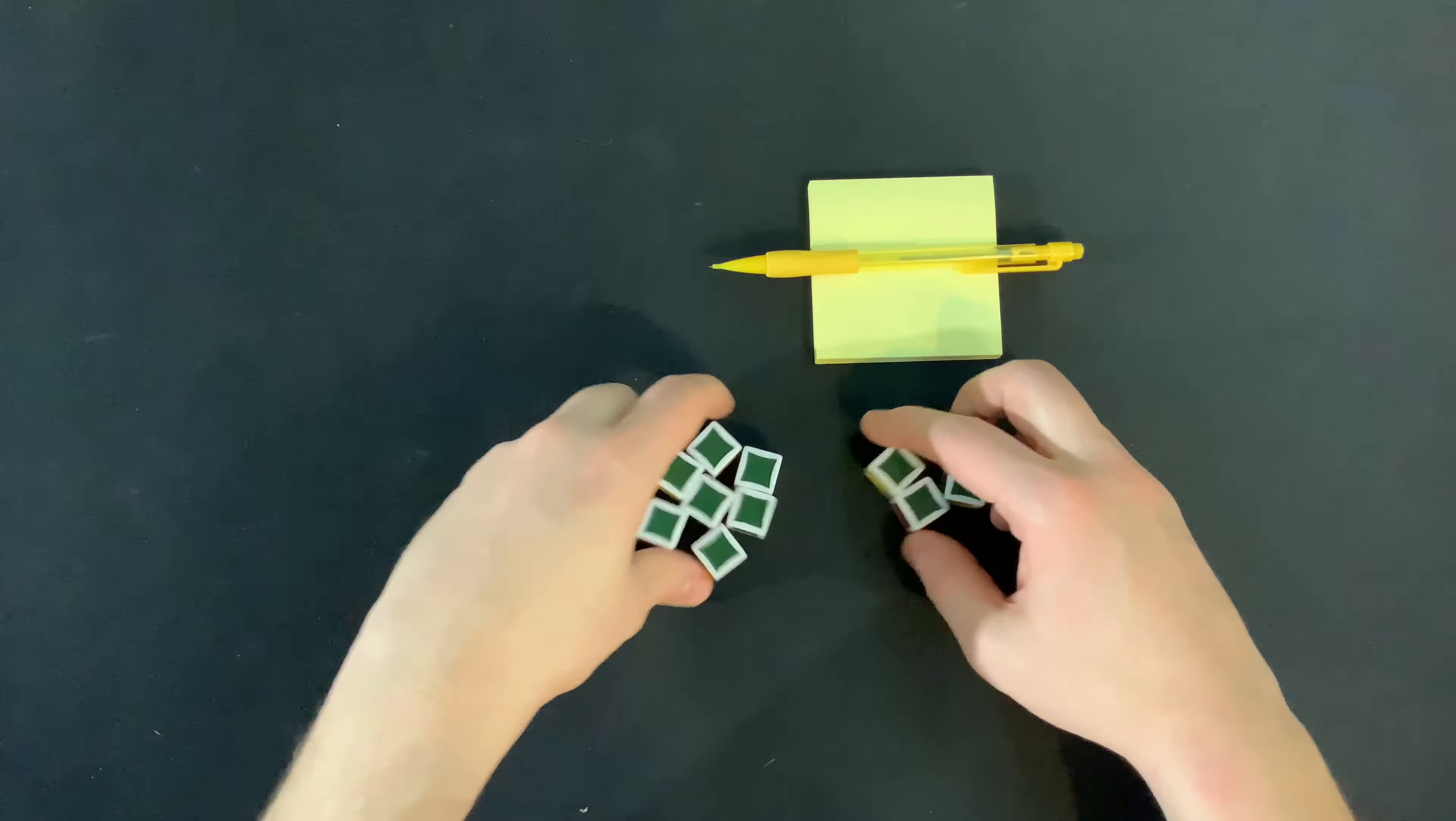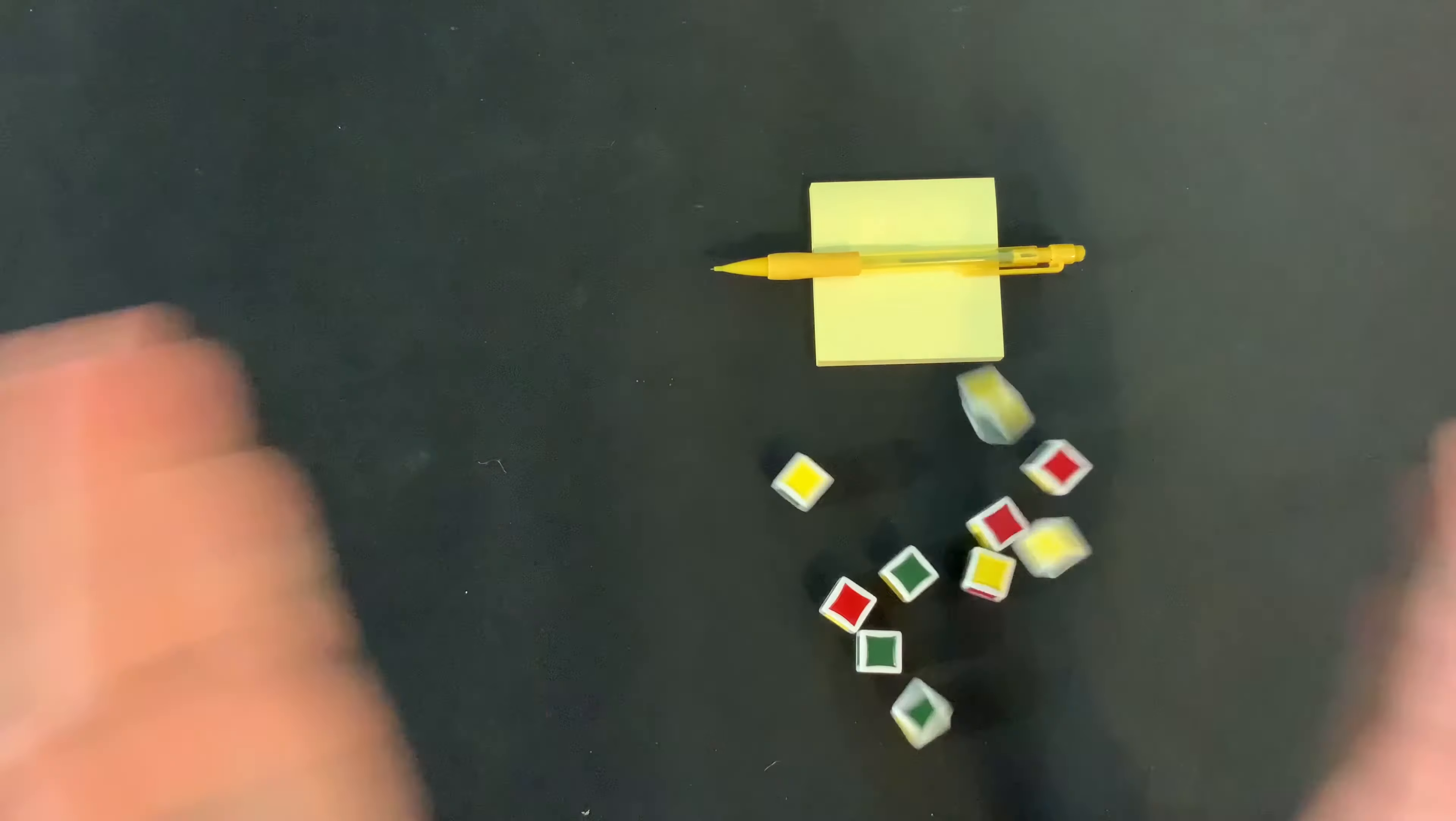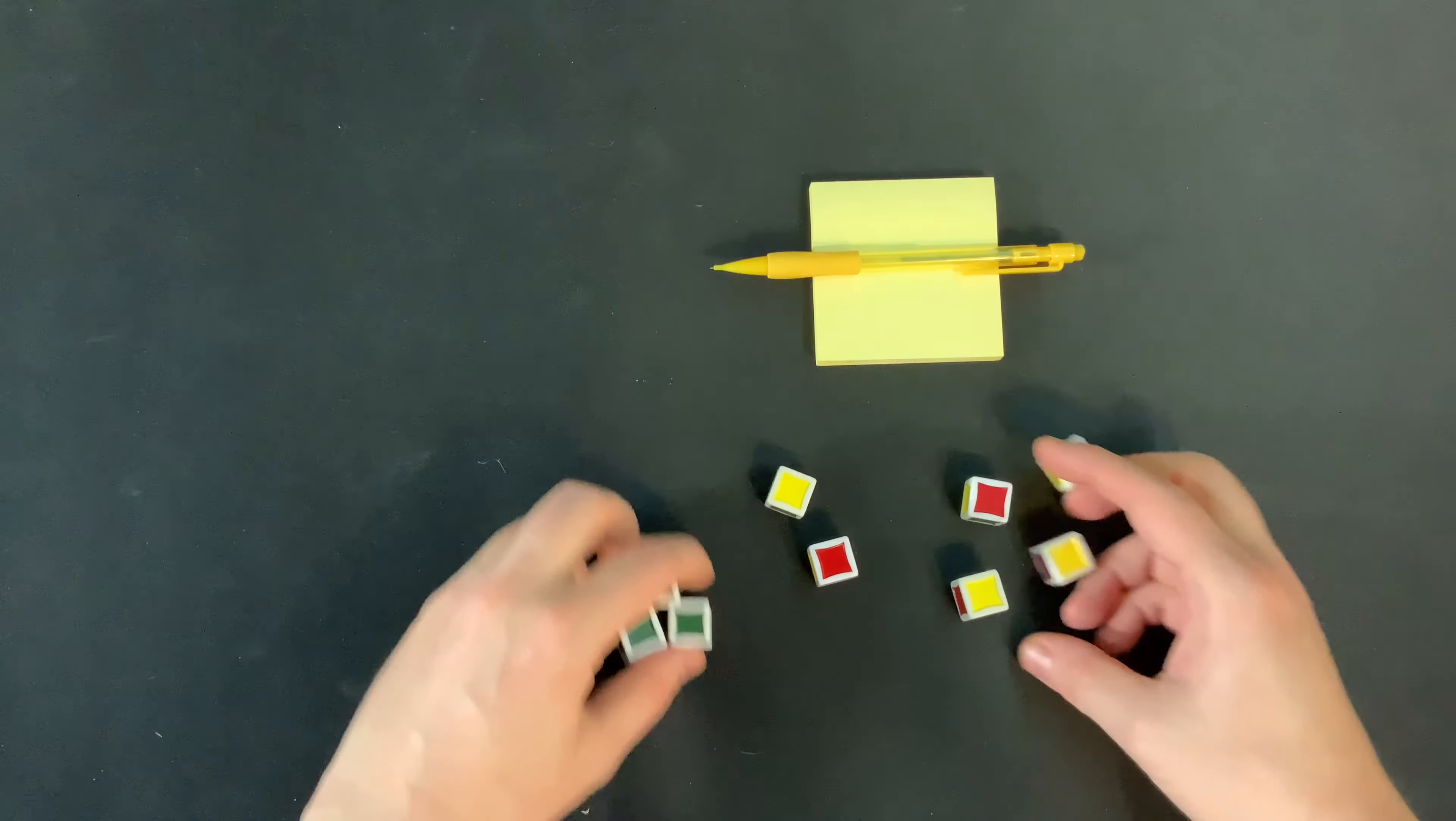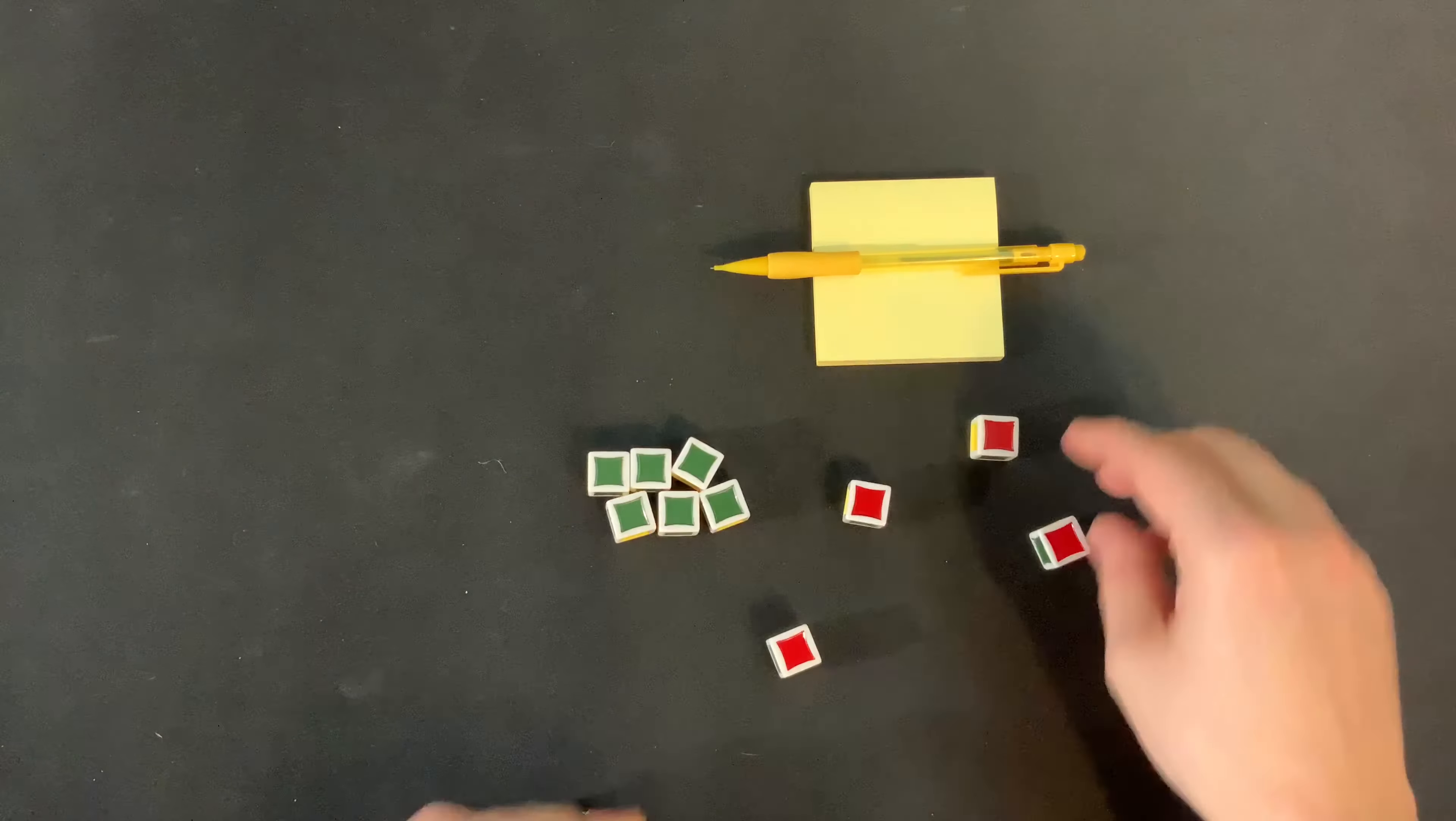Now, what can also happen is you might eventually get all the dice green. This means that you've essentially banked 10 points, and now you get to roll all the dice again, which means you have a very unlikely chance of not getting greens and getting all red. So at this point, we would now have 14 points because we banked the first 10, and we just keep going.